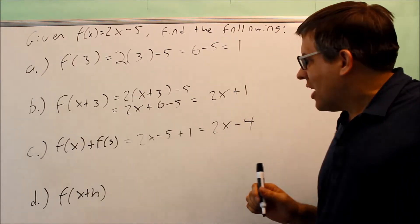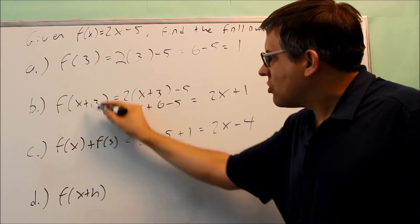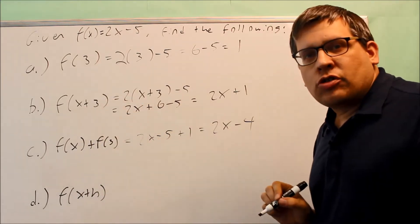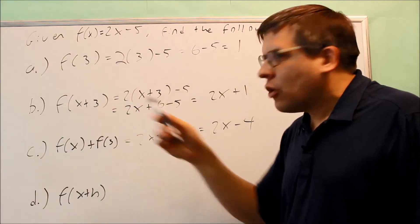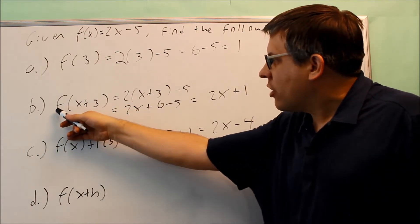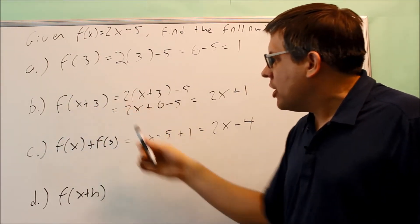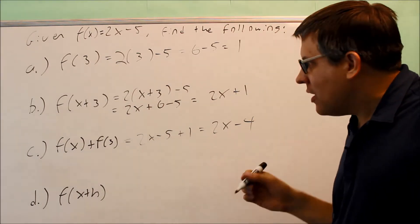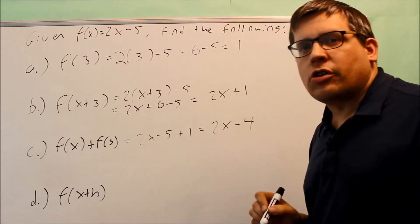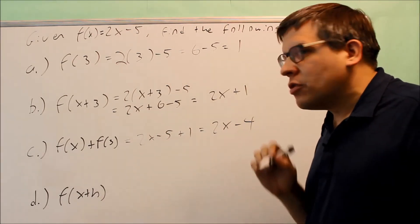So what this says is notice that these two are not equal to each other. A lot of times I see some students trying to distribute the f, and that's going to go into each of those. Well, you're not allowed to do that. You can't do f(x) and f(3) because we see right here that we got two different results. That means that these are not equal to each other. You're not able to distribute that.